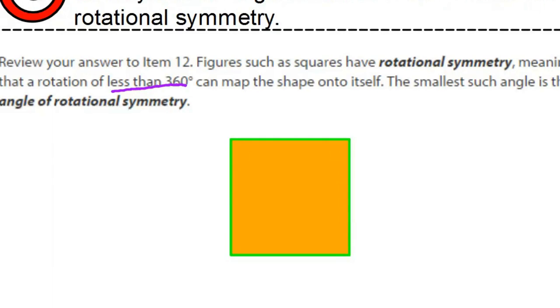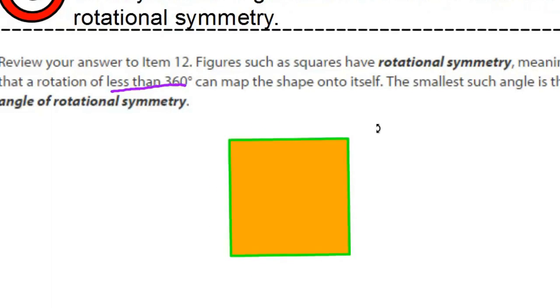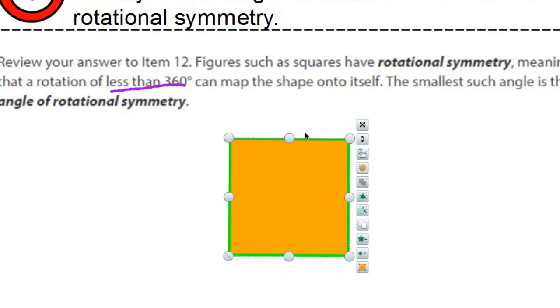But some figures like this square, notice that when I rotate it, it looks exactly the same as when it started here. And how many degrees was that rotation? Well, that was 90 degrees. So the square has a rotational symmetry of 90 degrees.